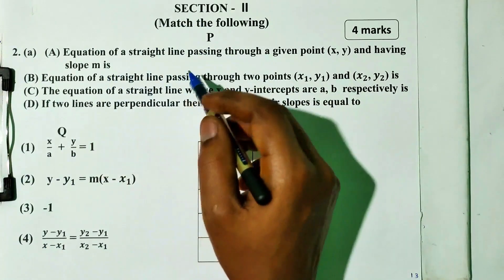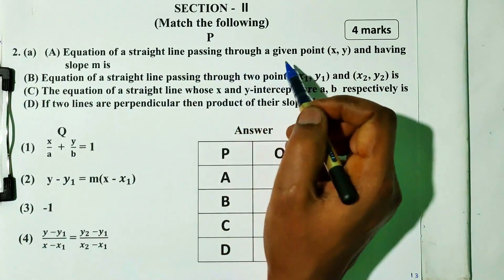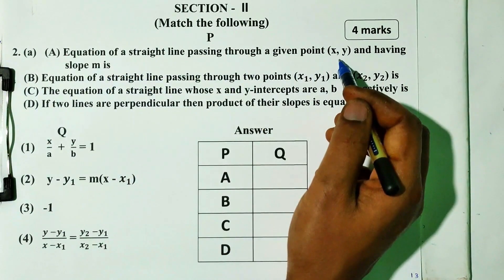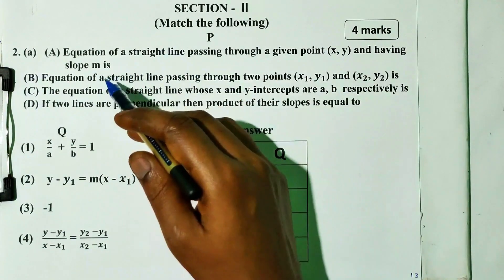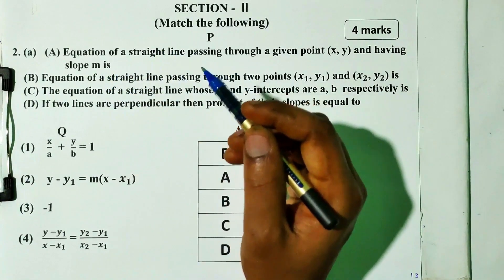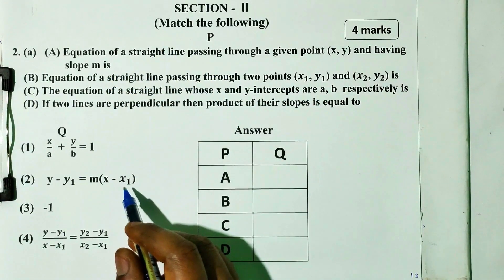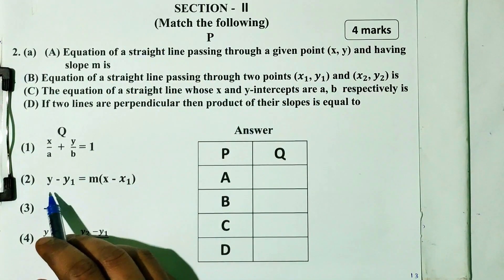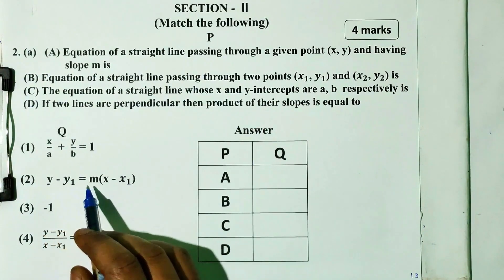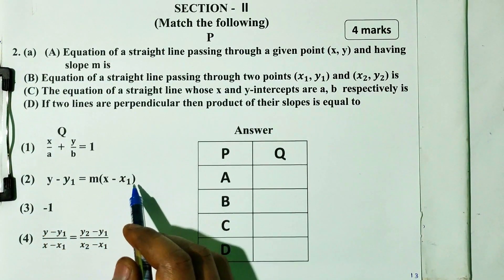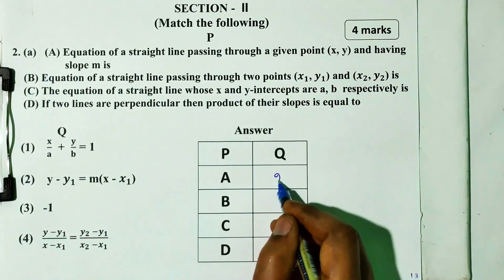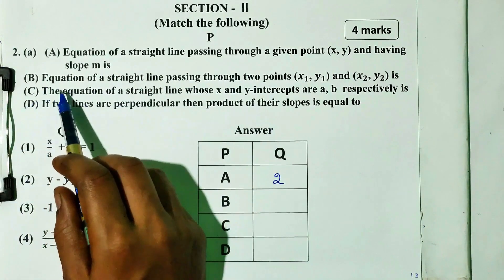First: equation of straight line passing through the given point (x1, y1) and having slope m. That is almost a formula. So that equation is y minus y1 is equal to m into x minus x1. So the second question answer is option 2.